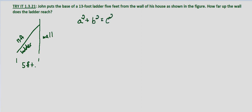We simply substitute the length of the base. The one leg we have is five, we're looking for the length of the other leg, and the hypotenuse is 13 feet. So five squared is 25 plus b squared equals 13 squared, which is 169.